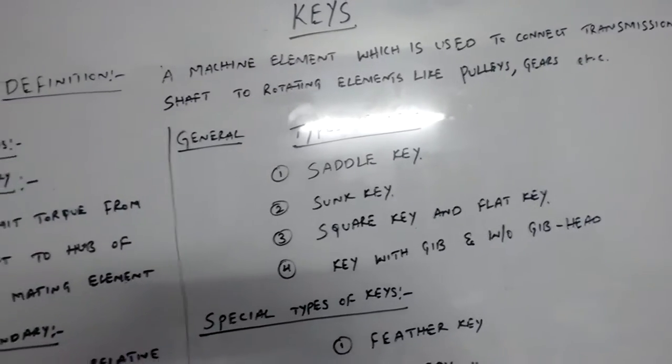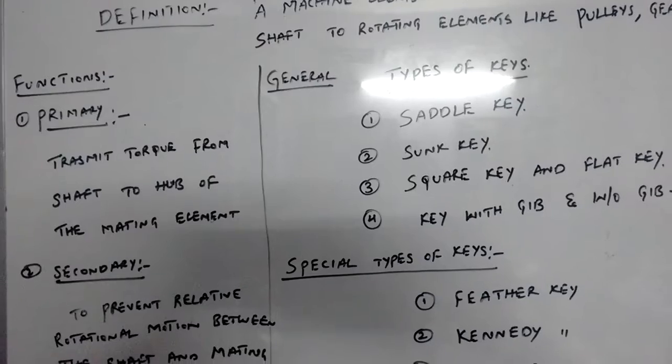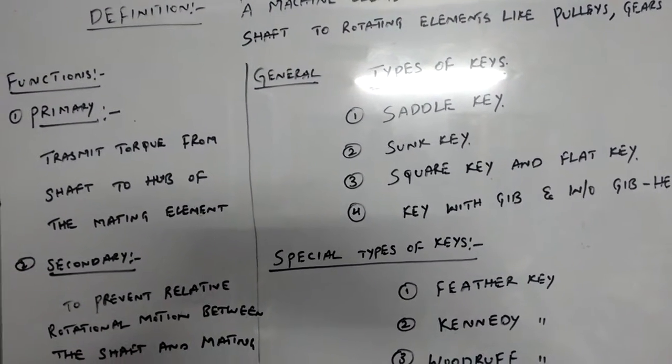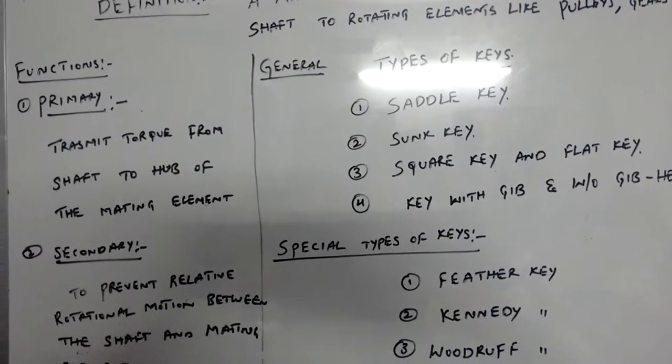Basically, there are two functions of the keys. The first primary function is it can be used to transmit the torque from the shaft, any shaft to hub of the mating element.